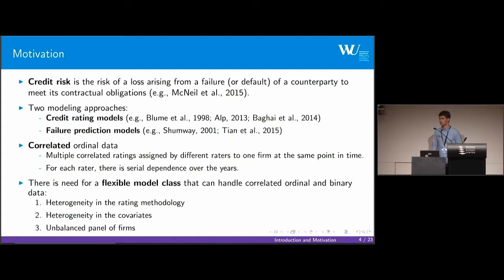The original motivation lies in the credit risk application. Credit risk is the risk of a loss arising from a failure or default of a counterparty to meet its contractual obligations. The most common measures of credit risk are credit ratings and probabilities of defaults. There are two main modeling approaches: credit rating models and failure prediction models. But the problem is that one only observes a few default observations.